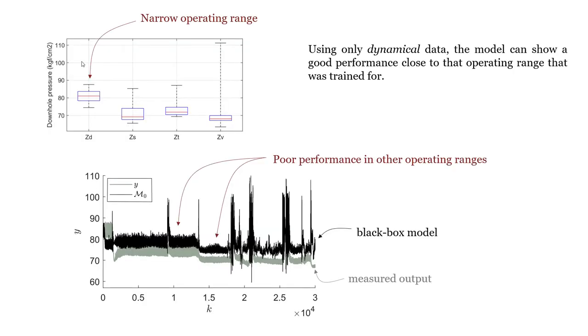Using only dynamical data, the model can show good performance close to the operating range it was trained for, but poor performance is achieved in other operating ranges.